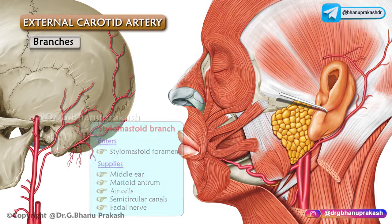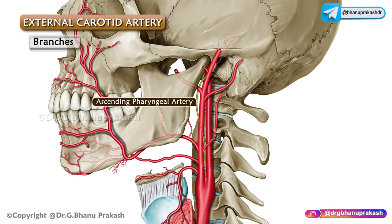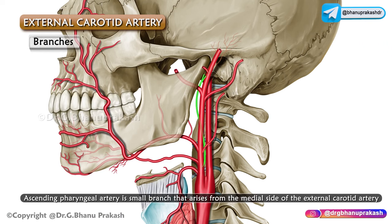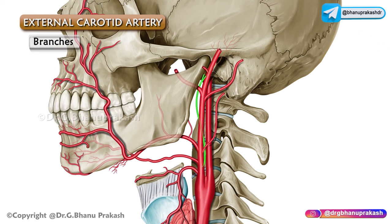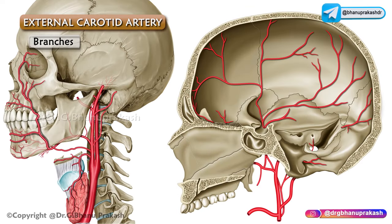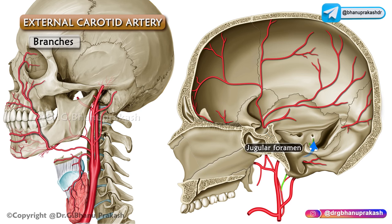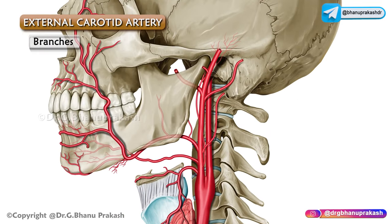The ascending pharyngeal artery is a small branch that arises from the medial side of the external carotid artery, very close to its lower end. It sends meningeal branches to the cranial cavity through the foramen lacerum, the jugular foramen, and the hypoglossal canal.